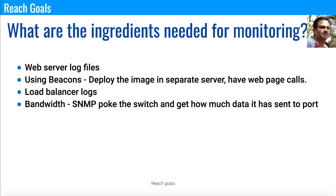If you want to know about the bandwidth of the system, the protocol available is SNMP — Simple Network Management Protocol. There are a lot of Java APIs available and you can use that protocol to connect with your different servers. From those servers you can get information like CPU capacity, disk space, bandwidth, etc., and it can be stored in a file or database and later used for monitoring.